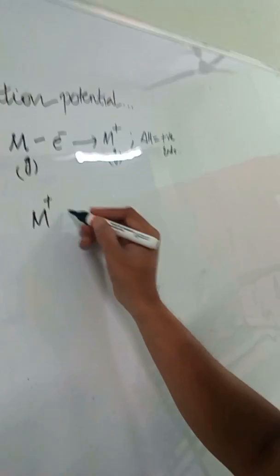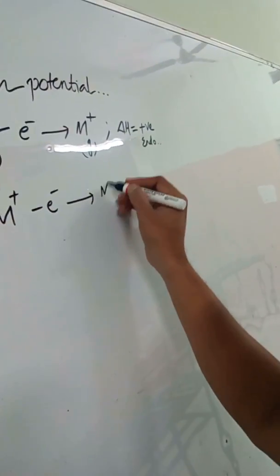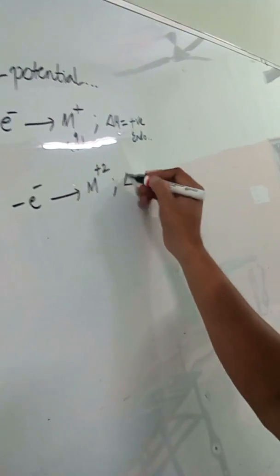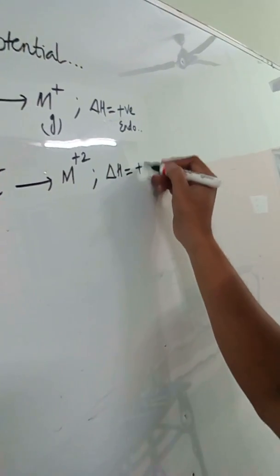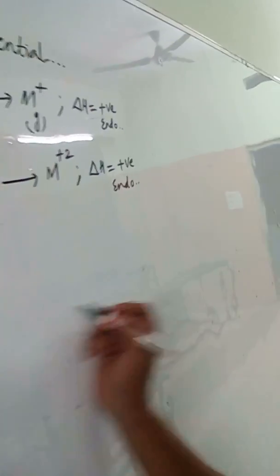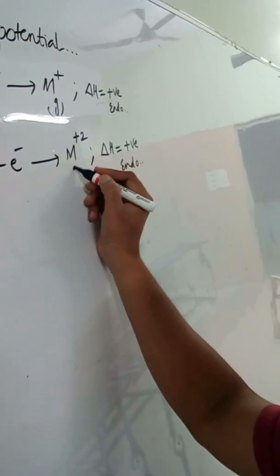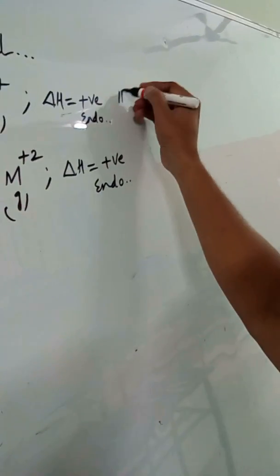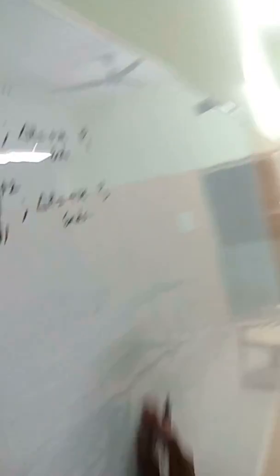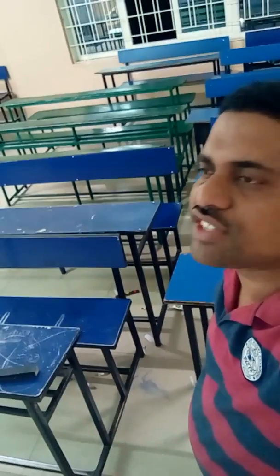If we remove another electron from M plus, it becomes M plus 2, a dipositive ion. Delta H is again positive, so this is also an endothermic change. The energy for the first removal is called ionization potential 1 (IP1), and the energy required to remove an electron from the unipositive ion is called ionization potential 2 (IP2).